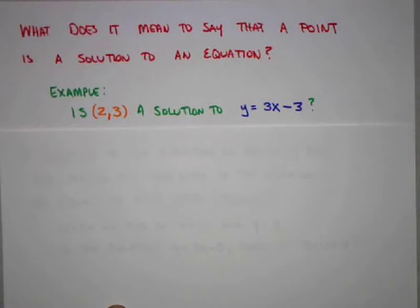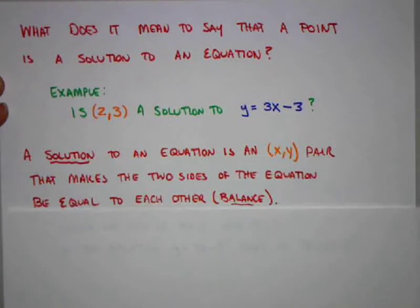In order to answer this question, it's going to help if we start by defining what it means to say that a point is a solution to an equation. A solution to an equation is an (x,y) pair—a number we plug in for x and a number we plug in for y—that makes the two sides of the equation equal to each other. In other words, that makes the equation balance.